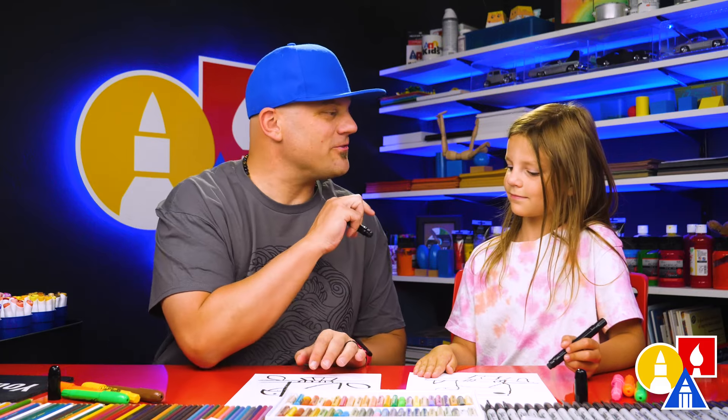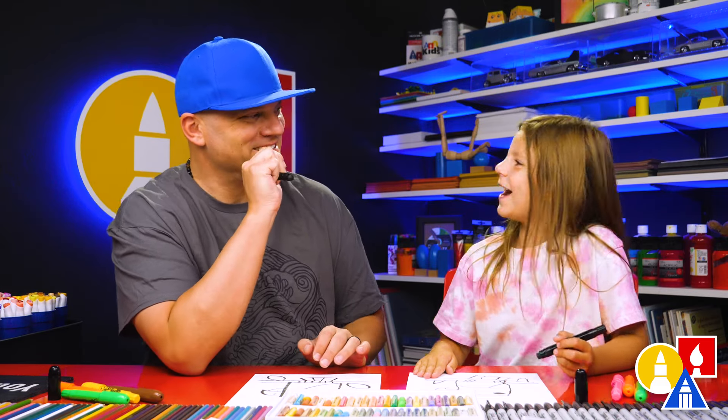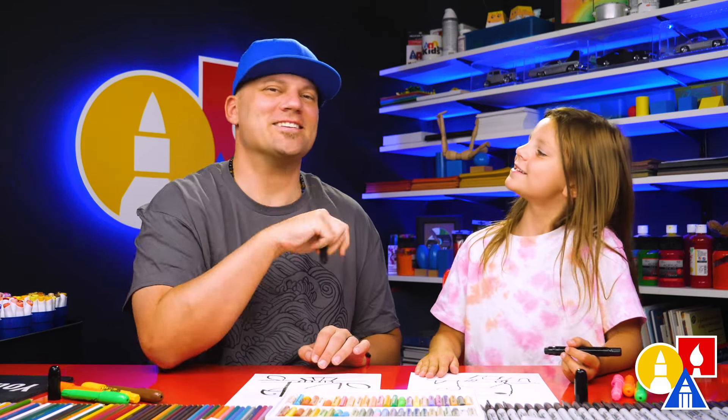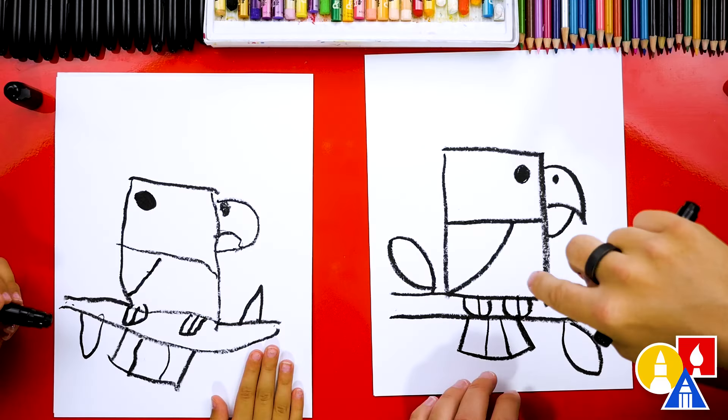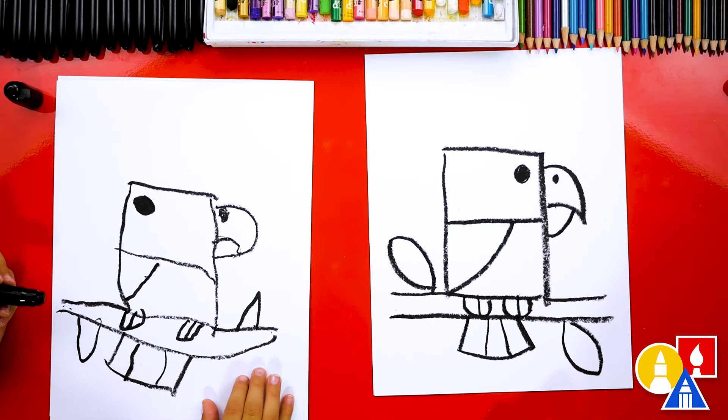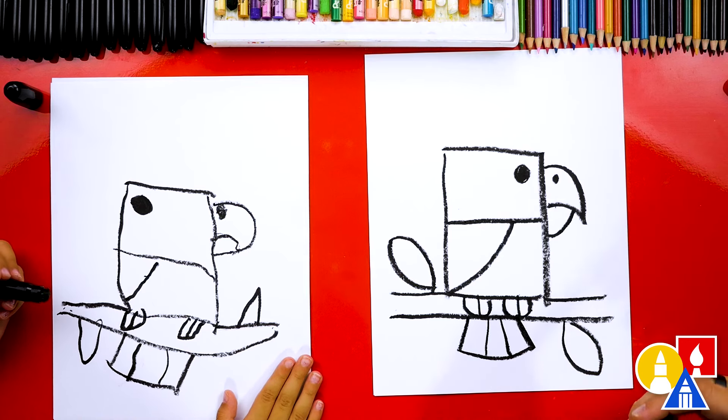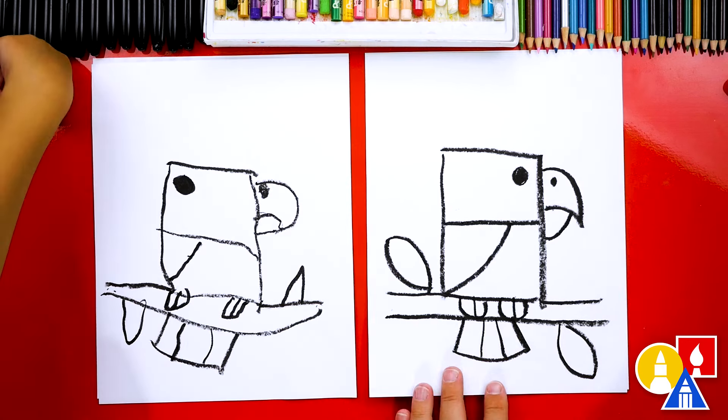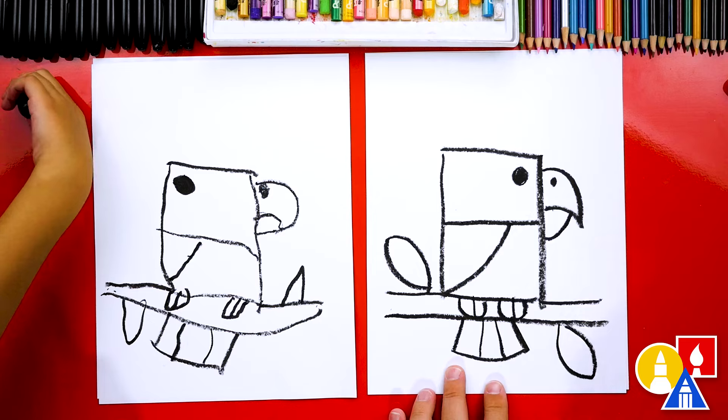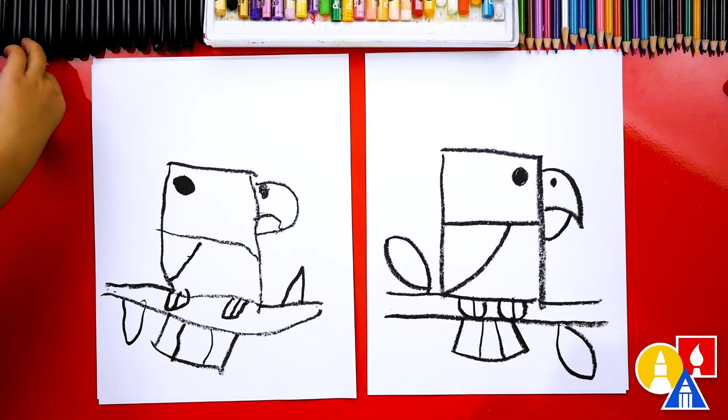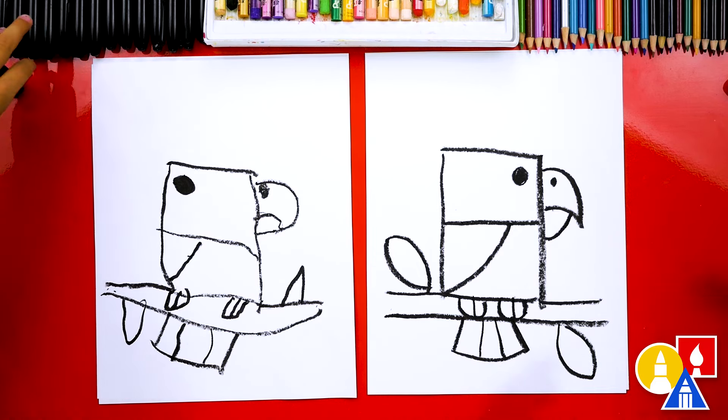And it's okay that they're different because the most important thing is to have fun and practice. Remember to practice. Okay, what do we still need to do to our drawings? Color it. Yeah, color it. This part we're going to fast forward. So remember to pause the video and take time to color your drawings. When we're coloring, let's leave the head white so that it looks like a bald eagle. Yes. All right, let's fast forward.